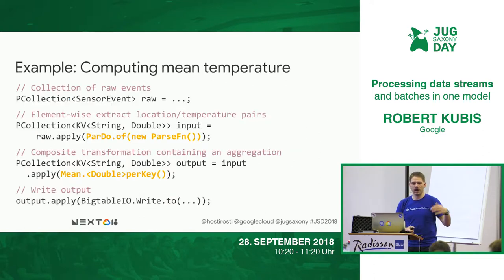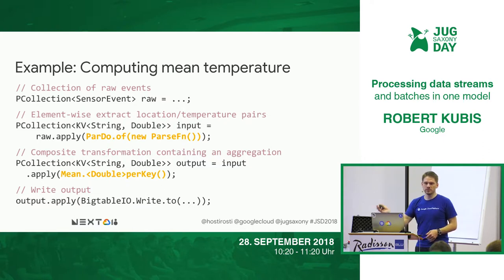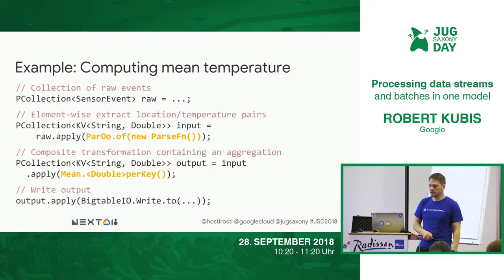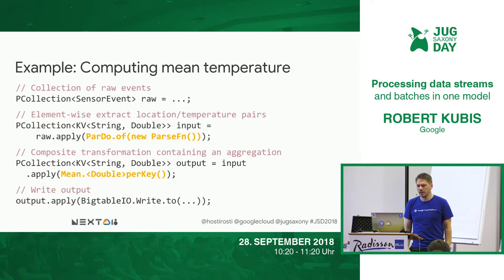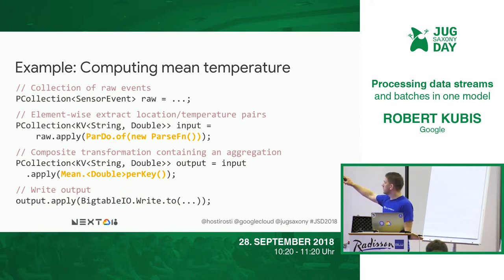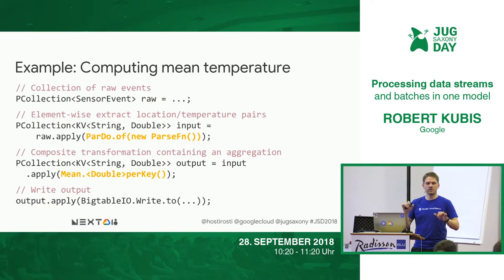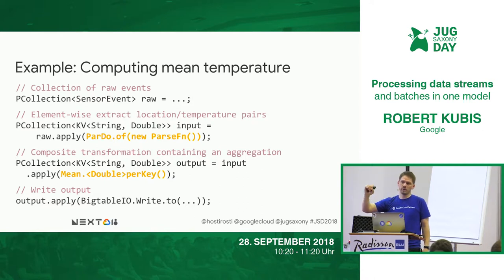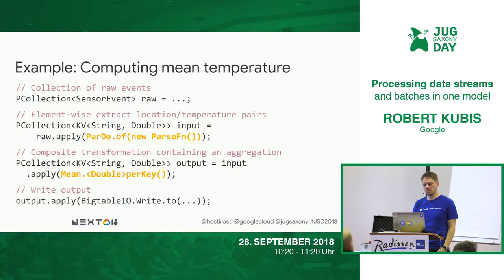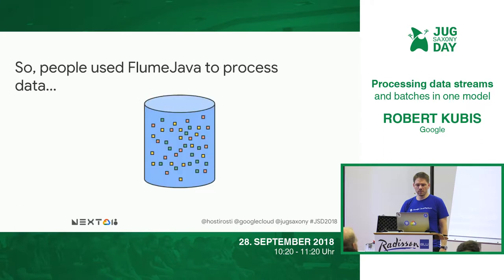Flume Java is a higher-level API where you describe the data processing steps, and the backend translates that into MapReduce jobs, also taking care of moving data between individual jobs. It's one higher level of abstraction that makes it more powerful to process data. For example, we define a PCollection and want to get the mean temperature at sensor locations. We apply a user function with a ParDo to parse sensor events and return key-value pairs of location and temperature, then do the aggregation with mean-double-per-key per sensor location, and write results back to a data sink. Very simple but powerful.